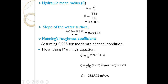Next, we calculate the slope of the water surface. Manning's equation requires S, and it is computed as: S = (400.20 − 380.38) / (1.73 × 1000) = 19.82 / 1730 = 0.01146 meters per meter.